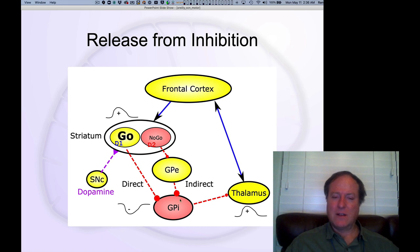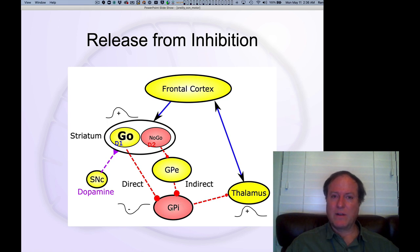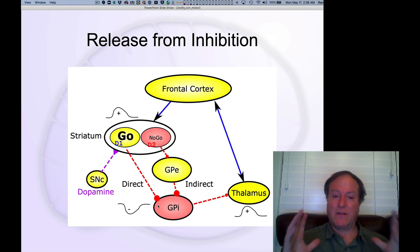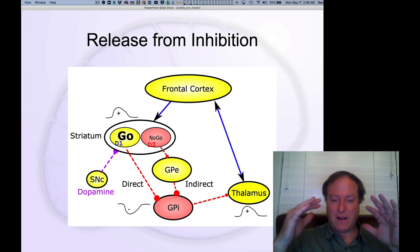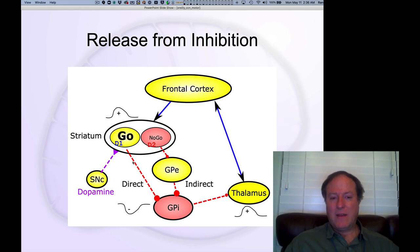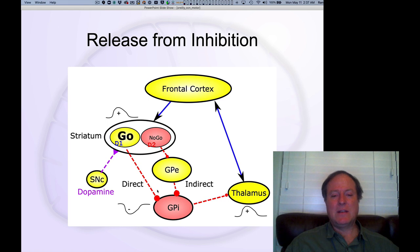There's another nucleus that plays the same role called the substantia nigra pars reticulata, and those are kind of isomorphic — it just depends on where you are in the overall circuit. Those neurons are typically firing tonically; they have intrinsic channels that keep them firing at a higher baseline level. The excitation from the frontal cortex of the striatum results in the inhibition or suppression of those cells.